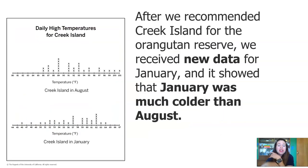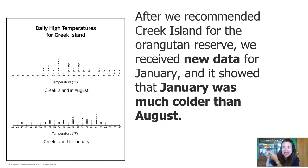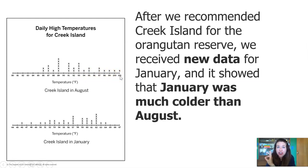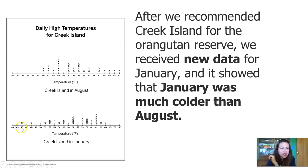After we recommended Creek Island for the Orangutan Reserve, we received new data for January showing that January was much colder than August. Take a look at this data to refresh your memory about the three islands we've been studying. The temperatures on Creek Island in August were up in the 80s, 90s, even some measurements up into the 100s — so Creek Island is very warm in August. But the temperatures in January are down in the 40s, 50s, and 60s. So we may have discovered that January might be too cold for the orangutans there.